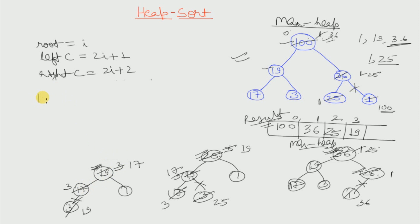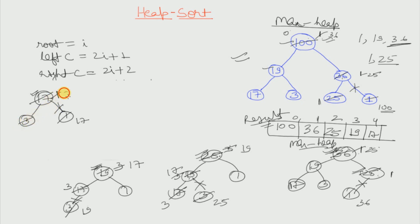Now our structure looks like: 17, 3 and 1. We replace this 17 with the last element, which is 1. We unlink 17 and store it in our resultant array at the 4th index. Then we max heapify this 1. There are only two elements in consideration: 1 and 3. Since 3 is the largest, 3 will replace 1 and the structure will look like: 3 and 1.